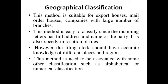This method needs to be associated with some other classification such as alphabetical or numerical classification. At the first level, classification is based on geographical area, say north-eastern zone. Then within the north-eastern zone, classification is done again by subject or alphabetically — for example, states like Assam, Manipur, Nagaland, and so on.